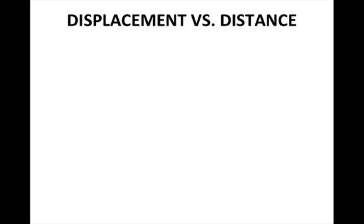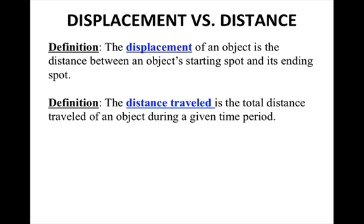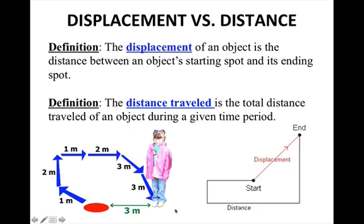The first thing we're going to talk about is displacement versus distance. The displacement of an object is the distance between an object's starting spot and its ending spot. The distance traveled is the total distance traveled by an object during a given time period. Looking at this picture, the displacement is just from where the child started to where she ended, whereas the distance is the total amount of distance that she traveled to get to her ending spot. Here's another example: if you start here and end here, the displacement is just the distance from the starting point to the ending point, whereas the distance is the path that you take to get to your end.